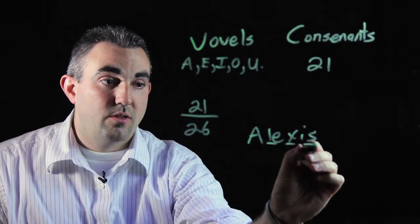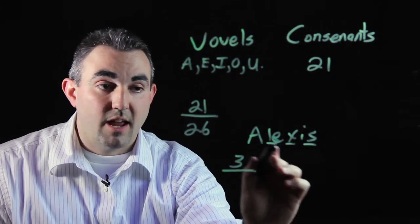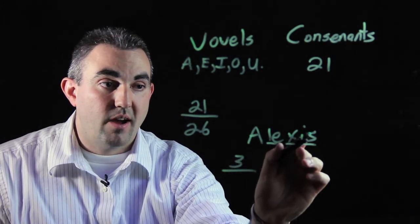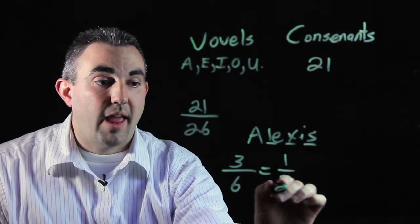There's one, two, three consonants out of how many letters are in Alexis's name. One, two, three, four, five, six. Three out of six, which reduces to one half.